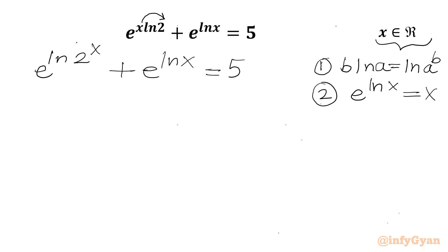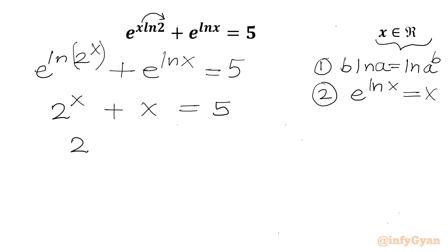Applying these properties, I can write 2^x plus x equals 5. Now subtract x from both sides, so 2^x equals 5 minus x.